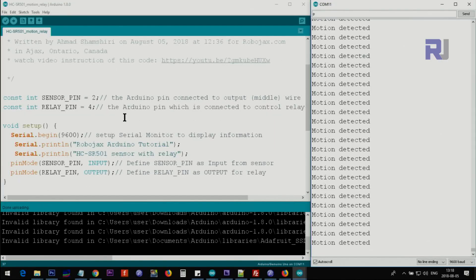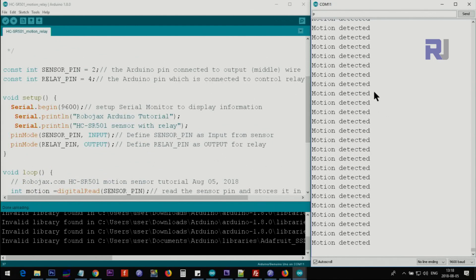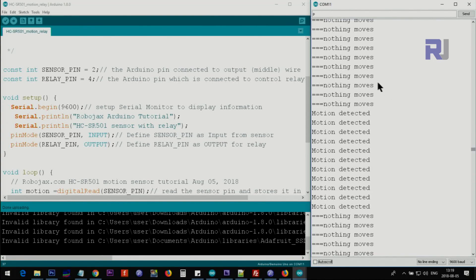Let me explain the code now. I'm using also serial monitor. When there is a motion, it should display motion detected, and if there is nothing, it says nothing moves. This pin is a sensor as constant, so the program will not be able to change it once the execution is started. So pin 2 is for the sensor input, and pin 4 is for the relay. And this is 9600 baud for the serial monitor. And this number at the bottom must match that 9600 baud, otherwise you will not be able to see it.